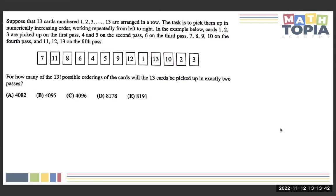7, 8, 9, 10 on the fourth pass, and 11, 12, 13 on the fifth pass. We'd go along, find 1, 2, 3, go along, 4, 5, go along again, pick up 6, go along again, 7, 8, 9, 10,